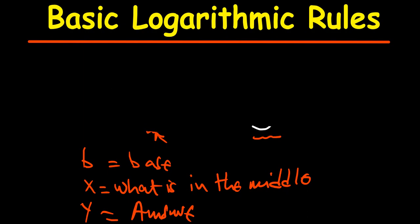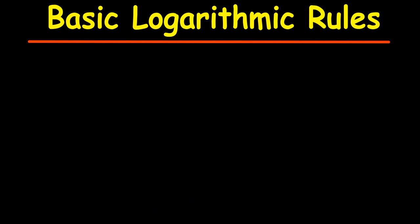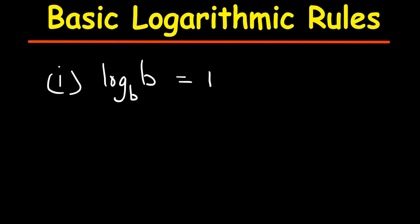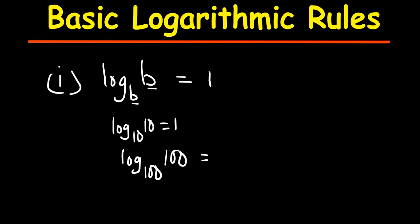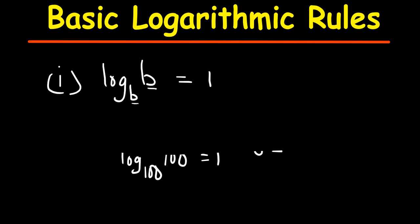There are a number of rules that you must be aware of when we talk about logs. The first rule says: if I have log base B of B, this is the same as 1. As long as the base equals what is in the middle, the answer is always 1. For example, log of base 10 of 10 is 1, log base 100 of 100 is 1, log base 50 of 50 is 1.